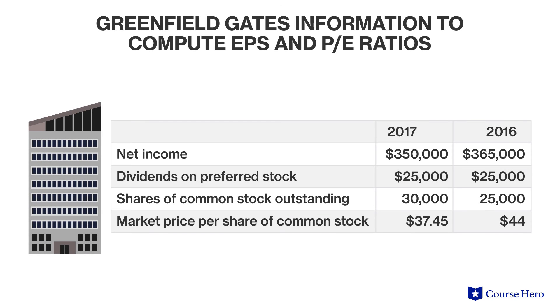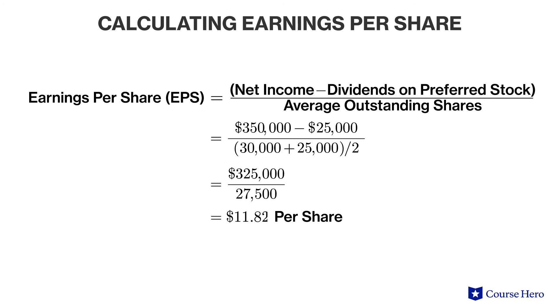The average outstanding common shares is the beginning balance of common shares outstanding plus the ending balance of common shares outstanding, divided by two. Suppose that Greenfield Gates Company has three hundred and fifty thousand dollars in net income for 2017, average outstanding shares of common stock totaling 27,500, and paid twenty-five thousand dollars in dividends to preferred shareholders. The earnings per share would be eleven dollars and eighty-two cents, which is the portion of net income hypothetically allocated to each share of common stock.